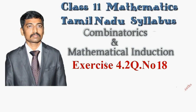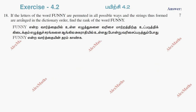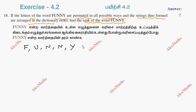Hi students, this is Alex here. Exercise 4.2, question number 18: if the letters of the word FUNNY are permuted in all possible ways and the strings thus formed are arranged in dictionary order, find the rank of the word FUNNY. The letters of the word FUNNY are F, U, N, N, Y.